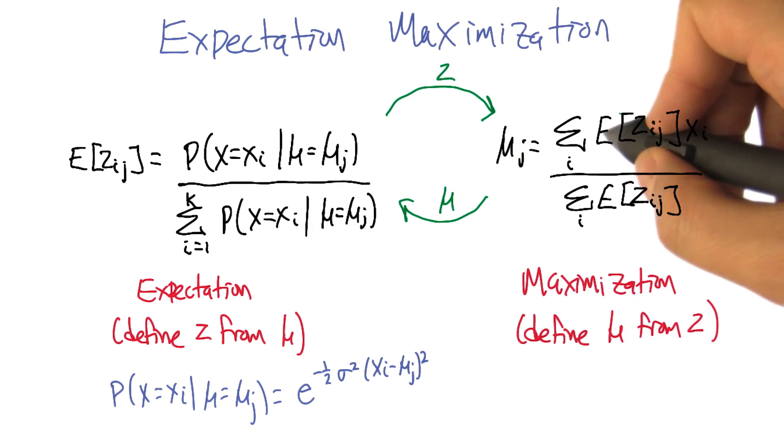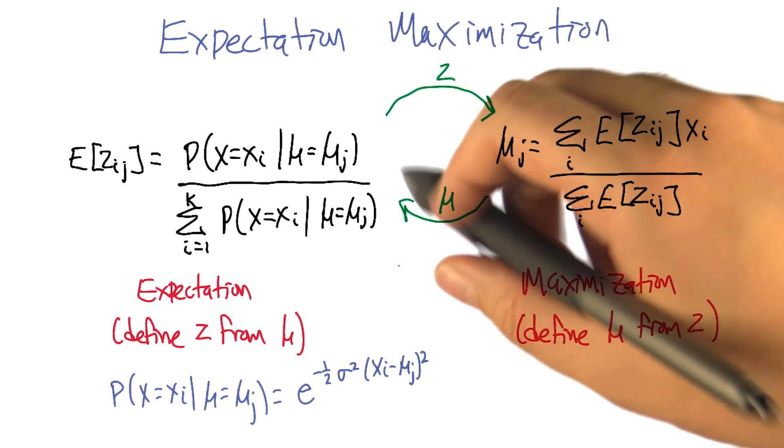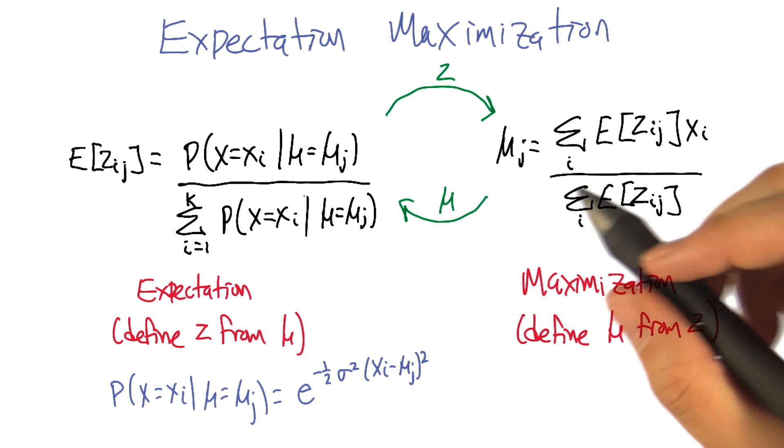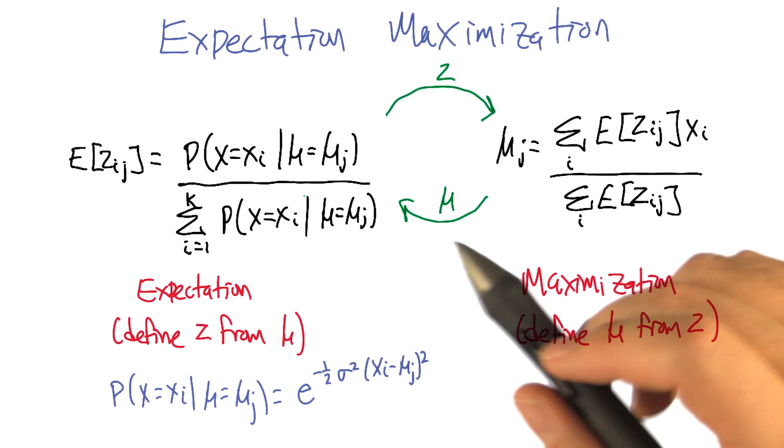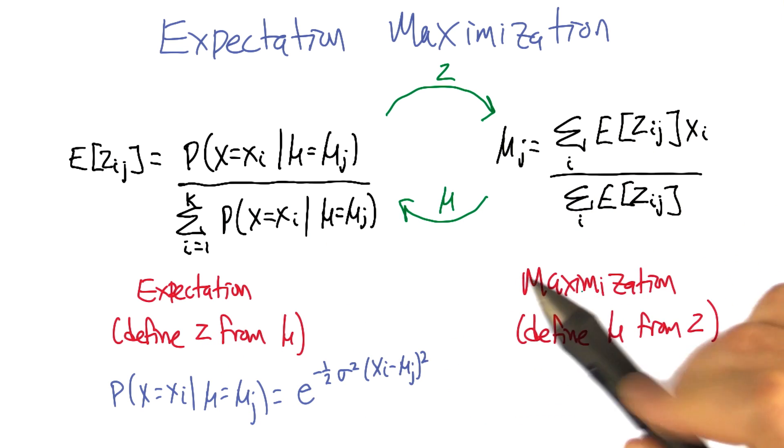What we're going to do is tick-tock back and forth between two different probabilistic calculations. The names of the two phases are expectation and maximization.